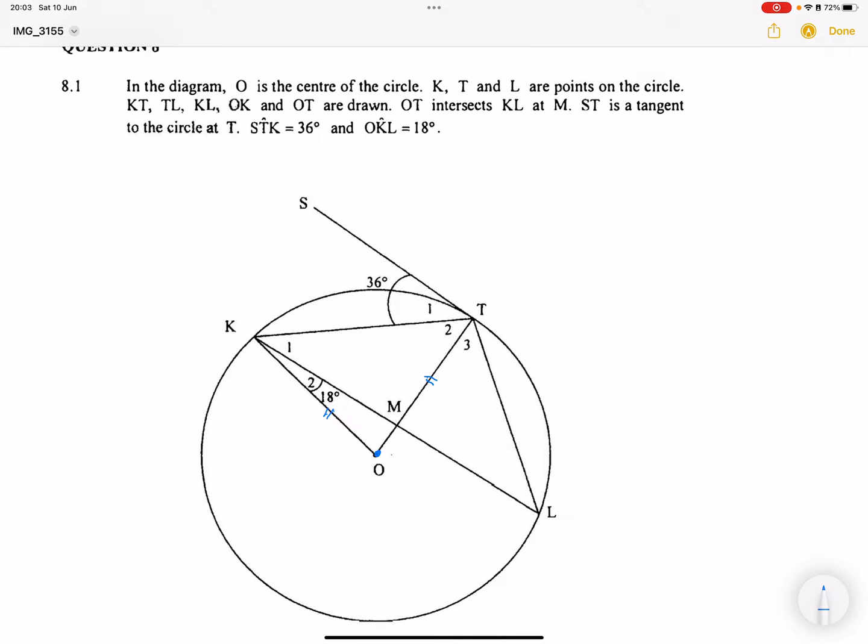What that means is that triangle OKT would be an isosceles triangle. If you look at this, then it means that T2 would be equal to K1 plus K2 in that triangle. These are base angles of an isosceles triangle. We don't know if we're going to need that, but let's continue with the information.